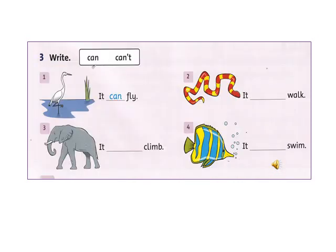Điền can hoặc can't vào câu cho thích hợp. Các con kiểm tra kết quả bài làm của mình. (Fill in 'can' or 'can't' in the sentences appropriately. Check your answers.)